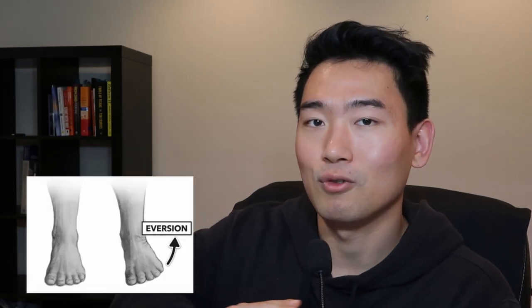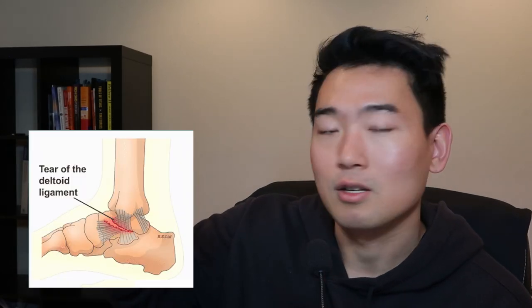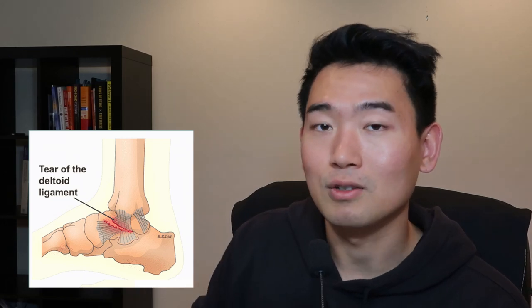It's also worth noting that his ankle is in eversion, meaning the outside of his foot is up while the medial or inside of his foot is relatively down. His foot is also externally rotated relative to his right tibia and fibula. This is a very common mechanism of injury for high ankle sprains and could severely damage the ligaments on the medial side of his foot.